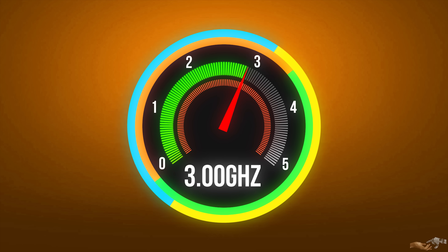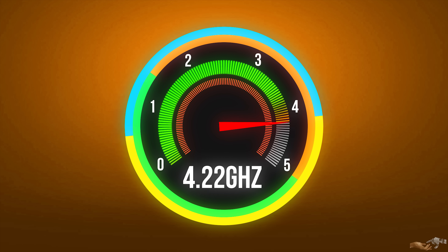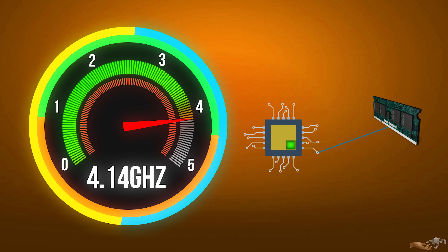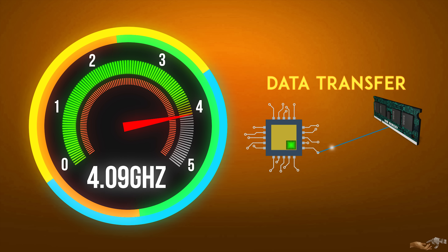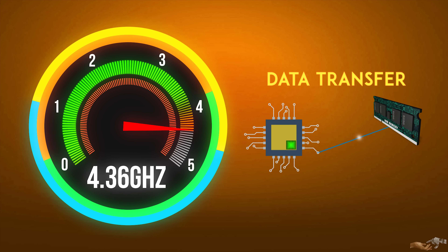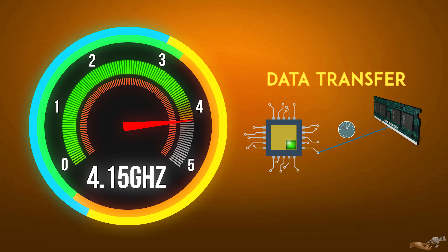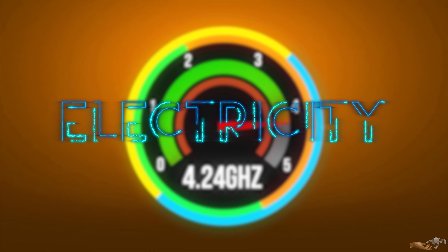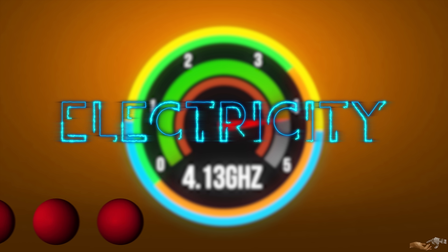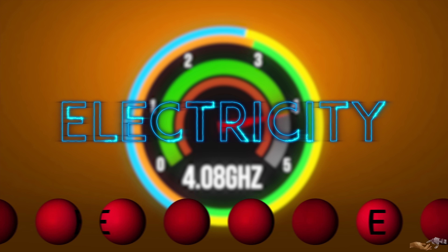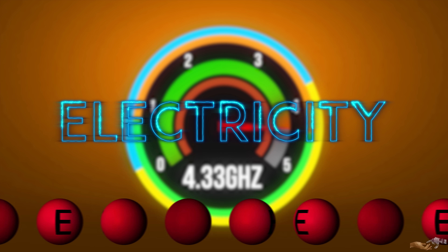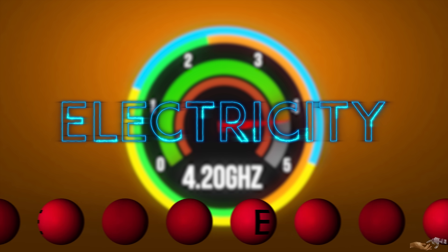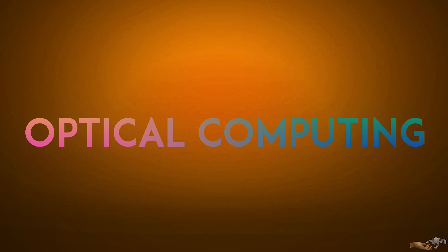The speed of computation is limited by two factors: how fast information can be moved — data transfer — and how fast that information can be processed — data computation. Currently, this limit is imposed via the properties of electricity, the flow of electrons. There is however another field of computing focused on a different paradigm: optical computing, also called photonic computing.